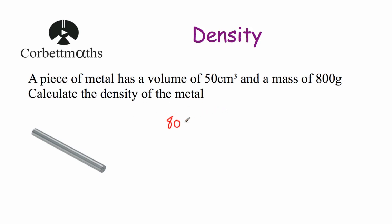So let's take our 800 grams and divide it by 50. 800 divided by 50 equals 16. So one centimetre cubed of this material has got a mass of 16 grams, meaning the density of this metal is 16 grams per centimetre cubed. Now when dealing with density, sometimes the units are grams per centimetre cubed, sometimes kilograms per metre cubed — it just depends on the question. In this question we're dealing with grams and centimetres cubed, so the density is 16 grams per centimetre cubed.